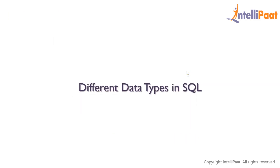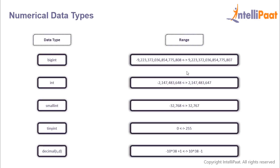Now that we've understood what exactly data types are, let's have a look at the different data types available in SQL. Let's start with the numerical data types. We have the BIGINT data type which helps us to store really big values — you can see the range of BIGINT over here.